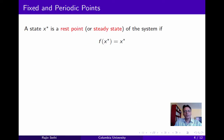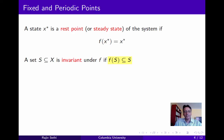We say that a point x-star is a rest point or steady state of the system if it's a fixed point of the function f. And we say that a set S in X is invariant under f if the image of the set is a subset of itself. The interpretation is: if a trajectory ever enters an invariant set, then it remains in S for all subsequent periods.